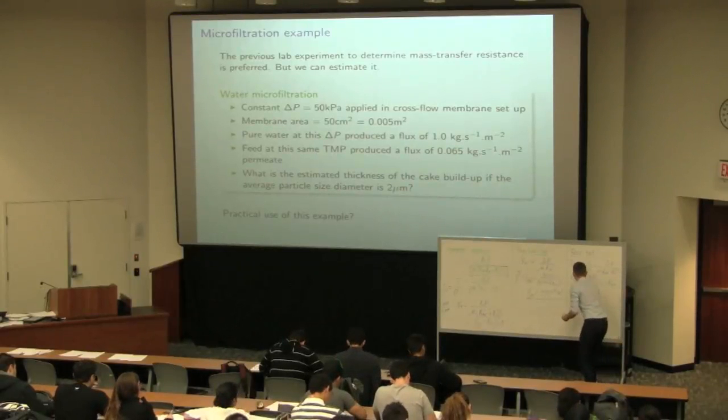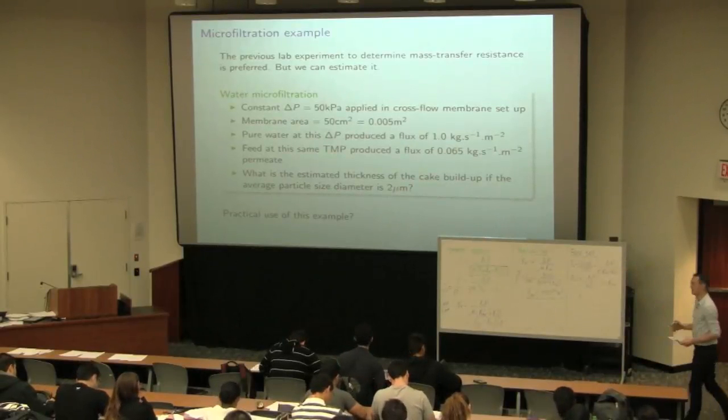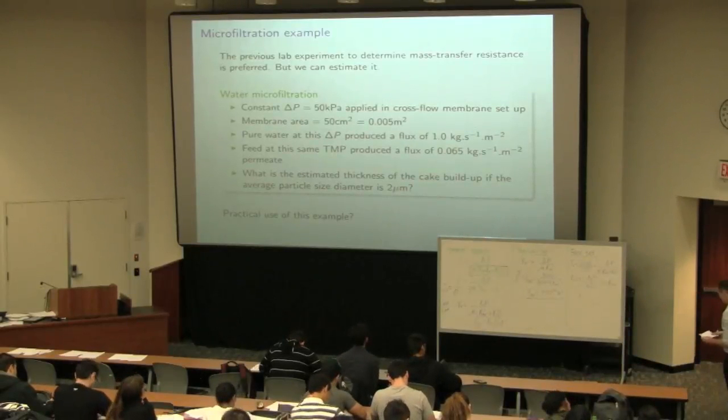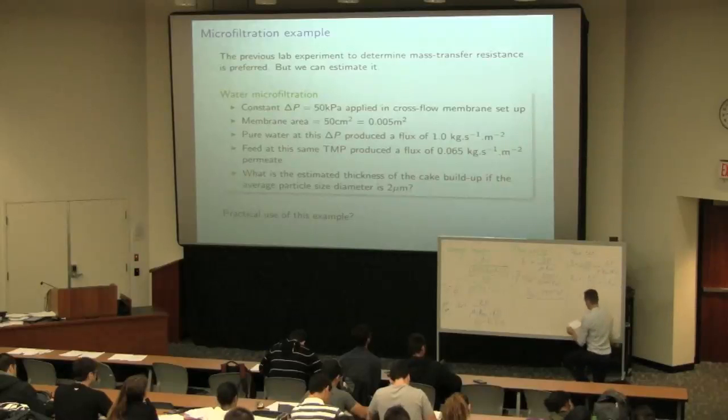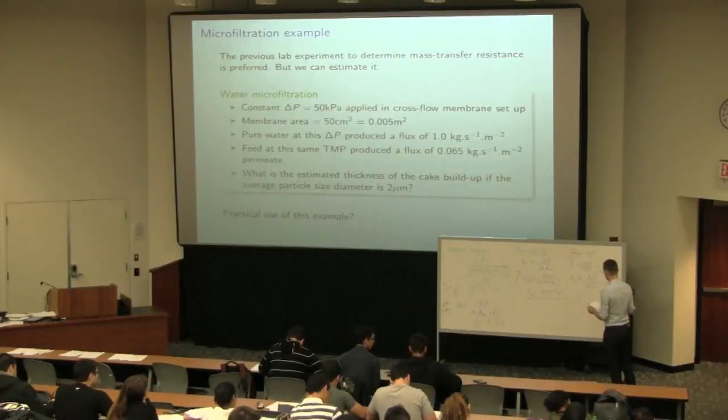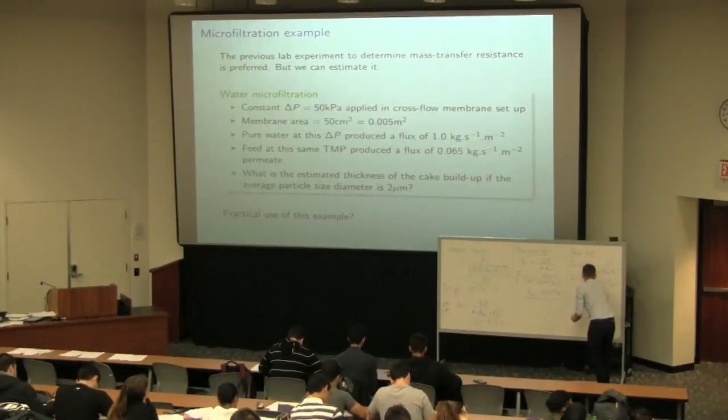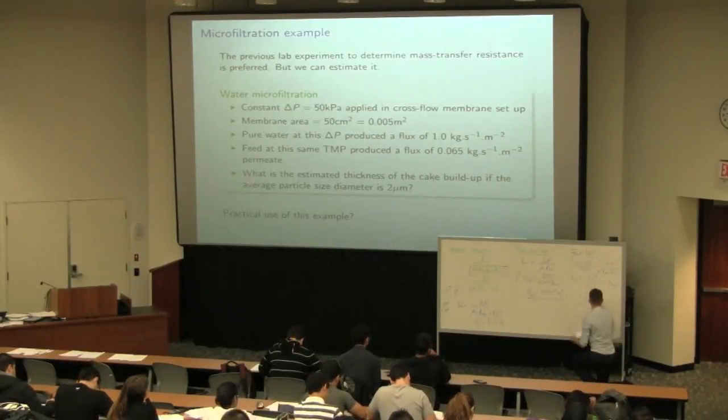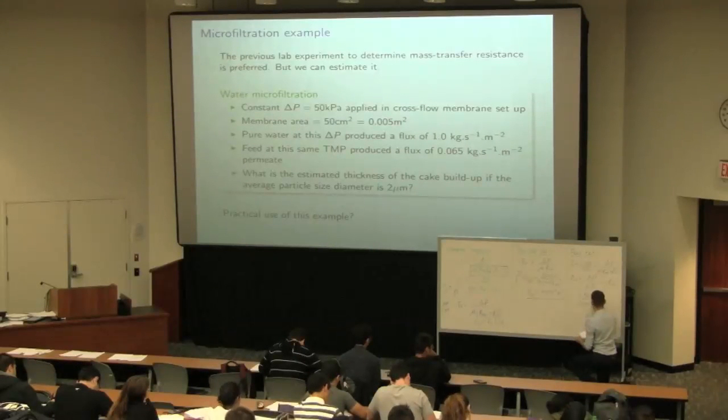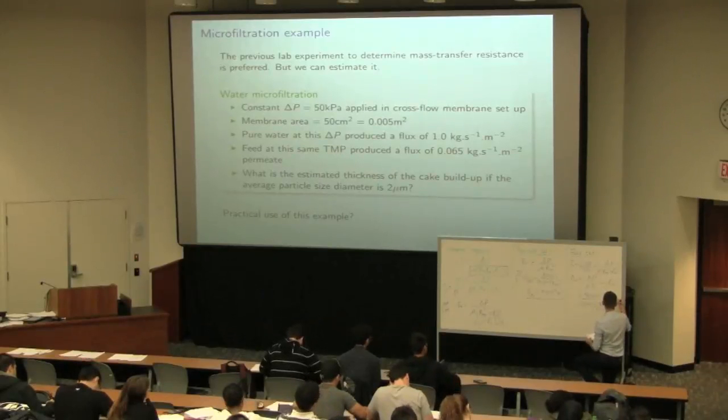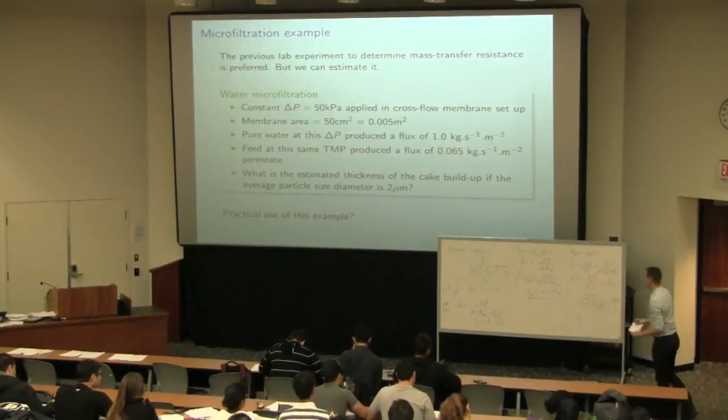So it's the same idea as in the problem we had just prior to this. Substituting in the values here we would get, and then flux JV here is 0.065 divided by 1,000. Minus the calculated membrane resistance.